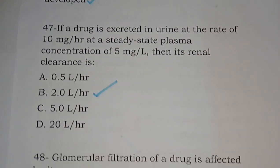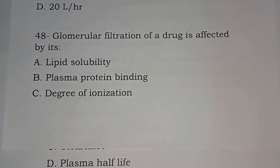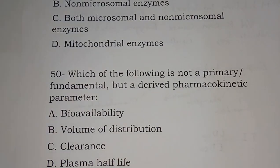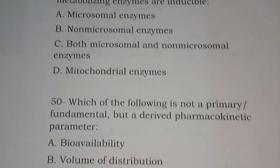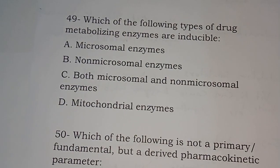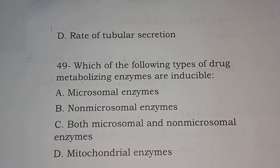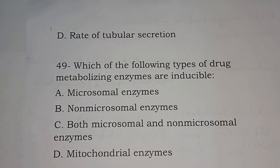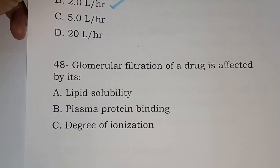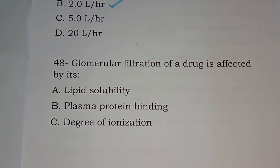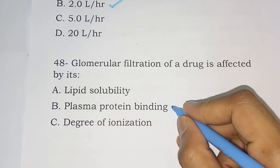Question 48: Glomerular filtration of a drug is affected by its lipid solubility, plasma protein binding, degree of ionization, or rate of tubular secretion. The correct answer is plasma protein binding.